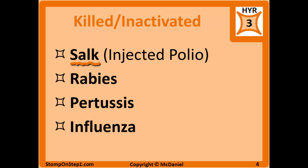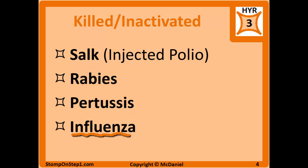The most important examples of killed and inactivated vaccines include the Salk vaccine, also for polio like Sabin, but this is the injected type and is more commonly used now. There's also the rabies vaccine and the pertussis vaccine. There are versions of the influenza vaccine that are killed and inactivated, but there are also other types of influenza vaccines that include only fragments of the pathogen rather than full dead pathogens.